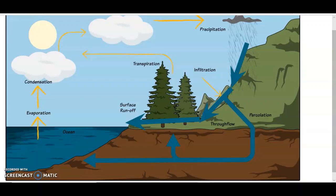We have all been shown a diagram like this, or a similar one to this, when we were at school. They claim this is the water cycle of the earth. This is fine when you are a child and are just beginning to experience the world, but once you grow up and become an adult and start to think for yourself, certain things just do not make any sense.